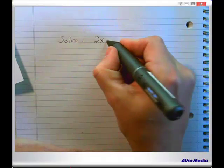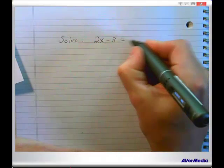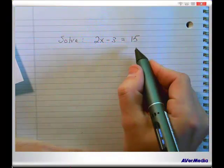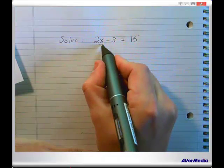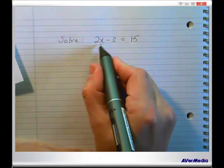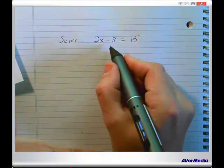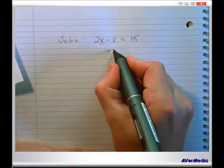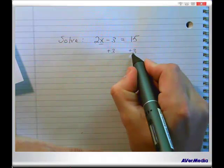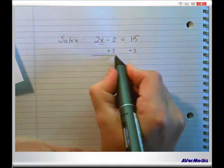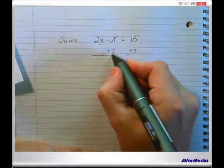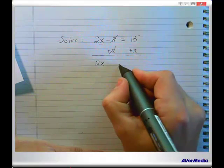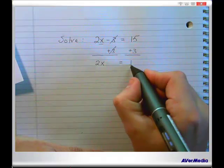I'm going to solve 2x minus 3 equals 15. In order to solve this simple linear equation we need to isolate the variable x. To isolate x, we're going to begin by undoing the thing that's farthest away from it. So let's add 3 — and we have to add 3 to both sides. By adding 3 to both sides and simplifying, the minus 3 and the plus 3 cancel, and we end up with 2x on the left.